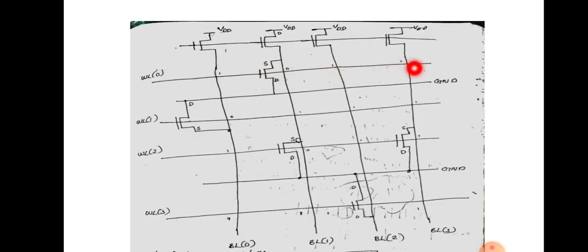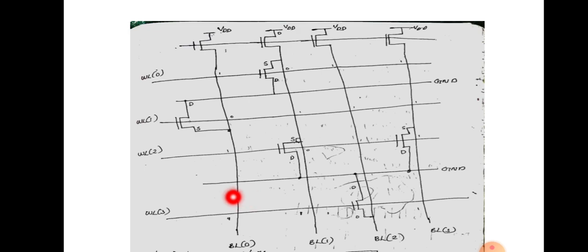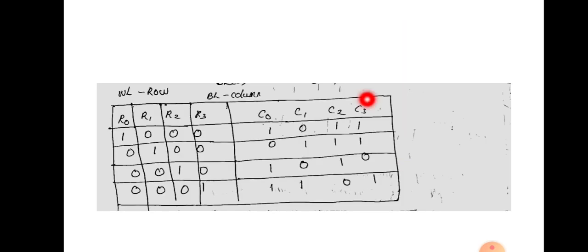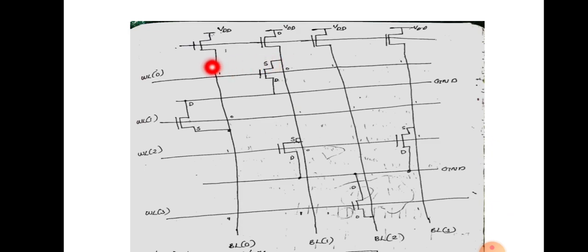The high word line activates the first transistor. It is NMOS. In this case, there is no 0 in this case — this is the same case. That is what we have to say about the presence of transistor storing 0 and absence of transistor storing 1.